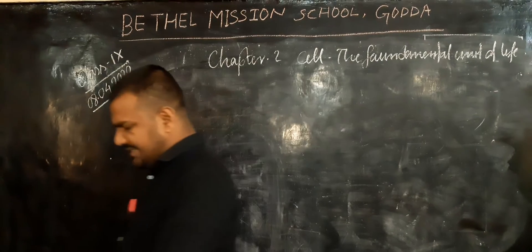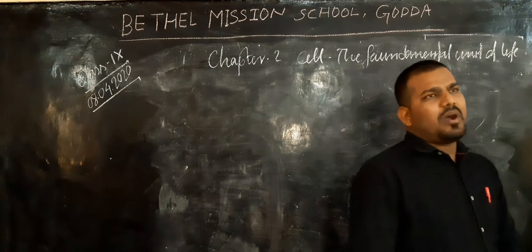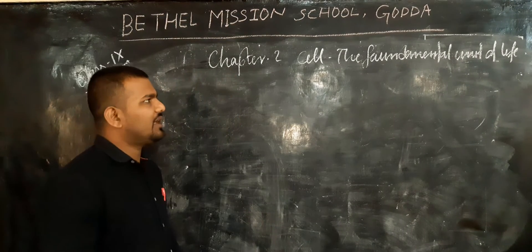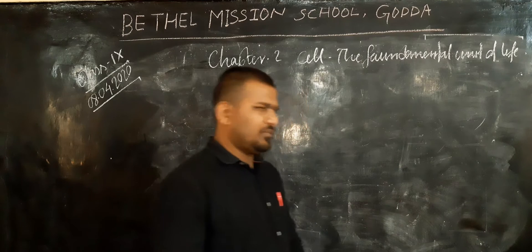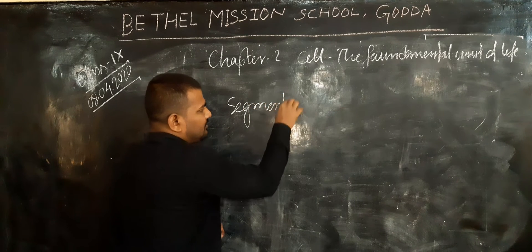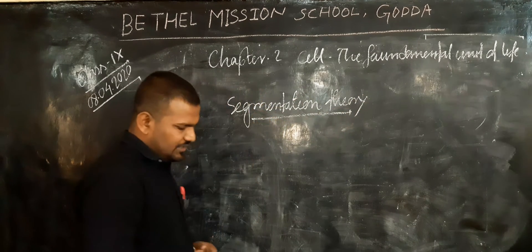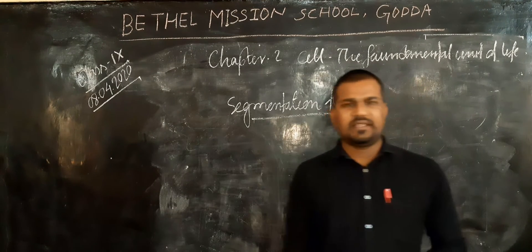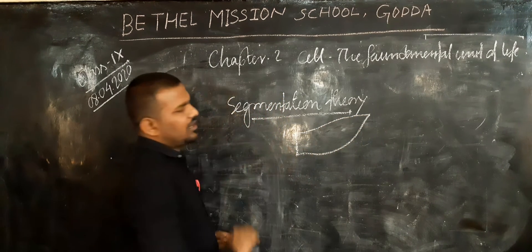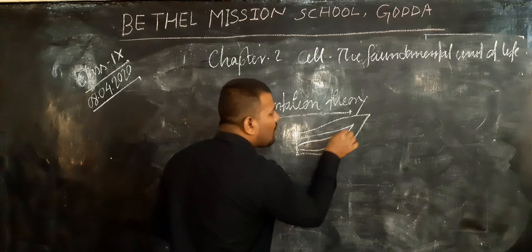But how did scientists discover all this? We know about Aristotle, the father of biology. Aristotle was the first scientist who proposed the segmentation theory about the structure of living organisms. According to the segmentation theory, behind the structure of a living organism there are present some segments, and these segments are repeated to form the whole structure.